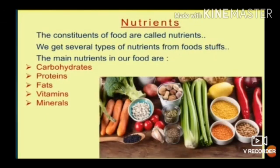Nutrient: The constituents of food are called nutrients. We get several types of nutrients from foodstuff. The main nutrients in our foodstuff are carbohydrates, proteins, fats, minerals, and vitamins.